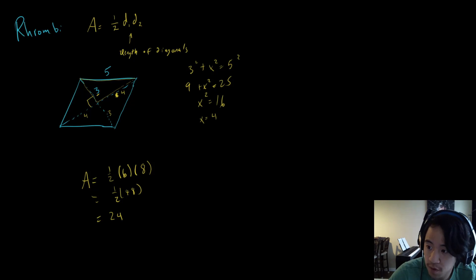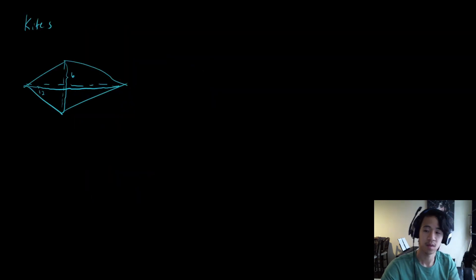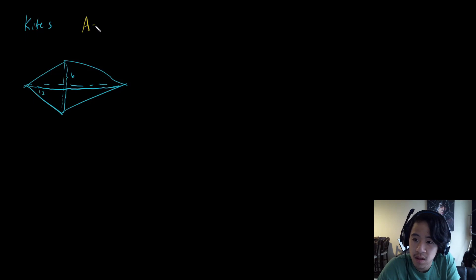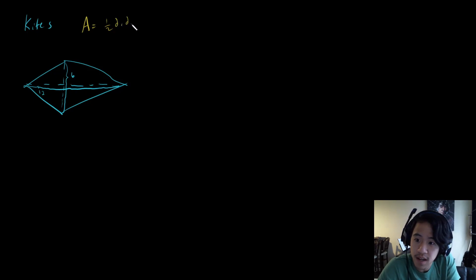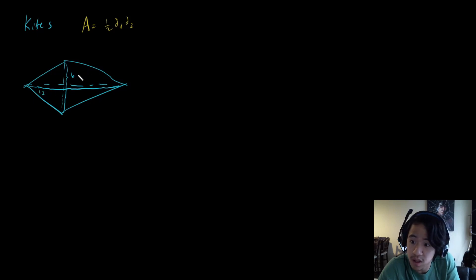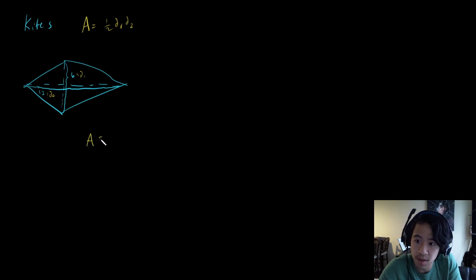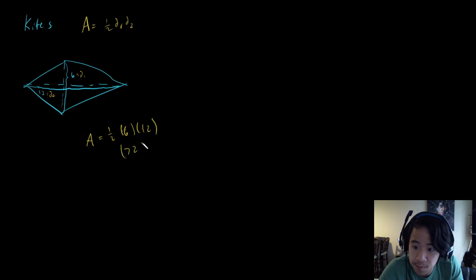Let's move on to kites. The area of a kite is shockingly similar to the area of a rhombus — it's one half times the length of the diagonals multiplied together. In this example we're given diagonal 1 equals 6 and diagonal 2 equals 12, so we plug in: one half times 6 times 12. Six times 12 is 72, and half of that is 36.